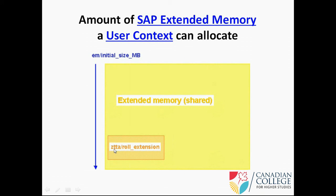This is called ISATTA role extension. If I am using role area first and coming to the extended memory or shared memory, then I will be allocated a certain amount of memory in the extended memory based on this parameter. This parameter is called ISATTA role extension.